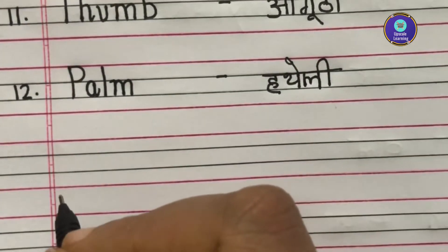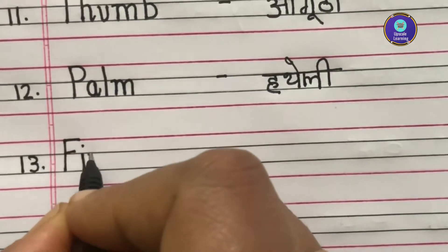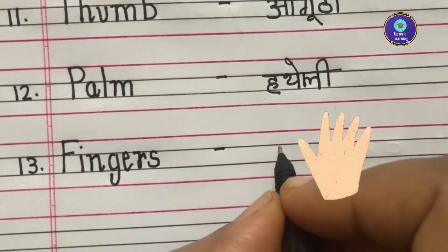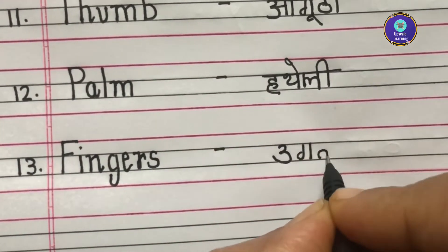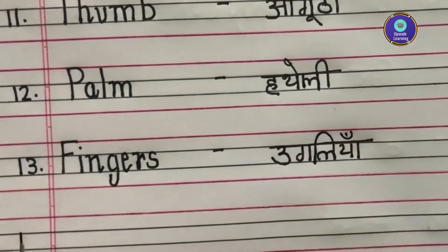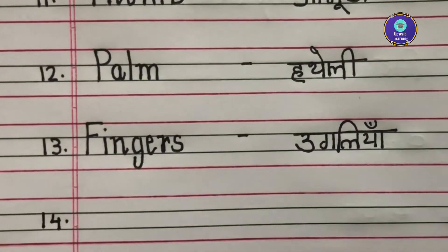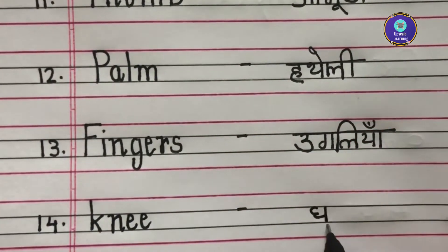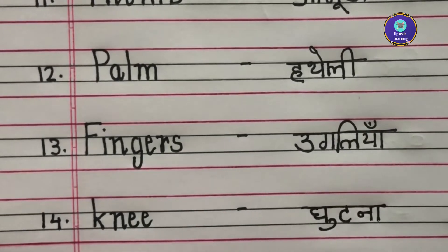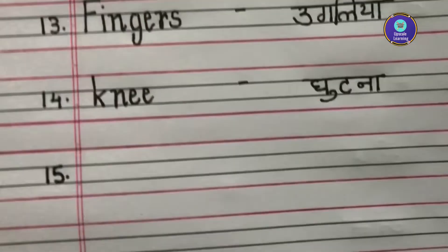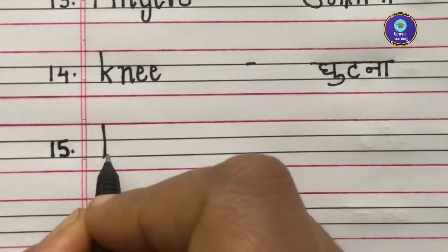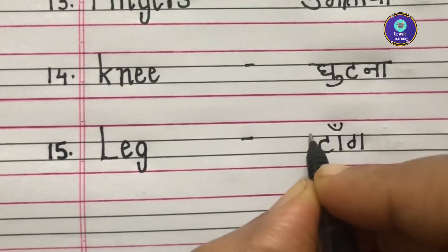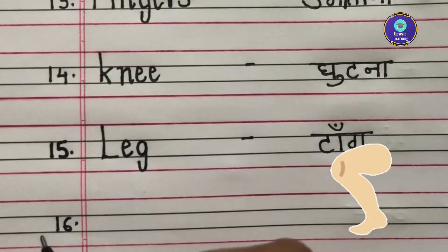Thirteenth one is Fingers, F-I-N-G-E-R-S. Fingers is called as Anglia in Hindi. Fourteenth one is Knee, K-N-E-E. Knee ko hum Hindi mein Ghutna kehtae hain. Fifteenth one is Leg, L-E-G. Leg is called as Tang in Hindi.